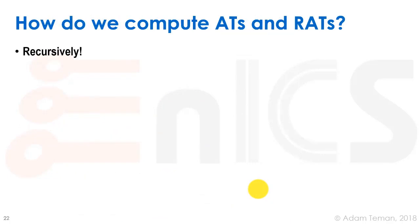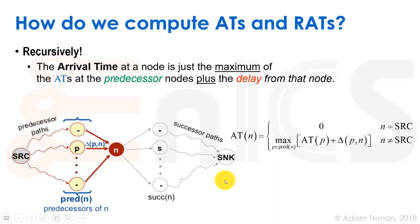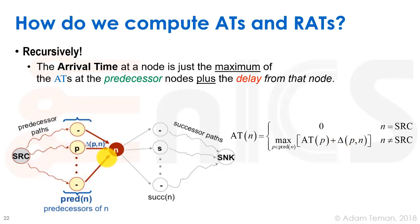To compute ATs and RATs, we do it recursively. The arrival time at a node is the maximum of the arrival times at all predecessor nodes, plus the delay from each predecessor. Specifically, the arrival time at the source is zero, and for any other node it's the maximum over all predecessors of (AT at predecessor + delay from predecessor to n). Graphically, we look at all nodes driving the fan-in to n, and take the largest arrival time plus edge delay — that is the arrival time at node n.